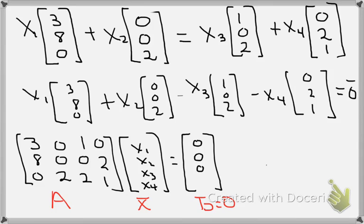I've got x1 times [3,8,0] plus x2 times [0,0,2] equals x3 [1,0,2] plus x4 [0,2,1]. I move everything to the other side, so the x3 term and the x4 term—these terms when they get moved to the other side of course become negatives.